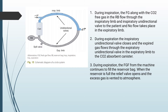During inspiration, the fresh gas with the carbon dioxide-free gas from the reservoir bag flows through the inspiratory limb (indicated by blue) and the inspiratory unidirectional valve to the patient, with no flow in the expiratory limb (shown in gray). During expiration, the inspiratory valve closes and expired gas flows through the expiratory unidirectional valve through the expiratory limb to the carbon dioxide absorbent canister. The fresh gas flow from the machine continues to fill the reservoir bag, and when the bag is full, the relief valve opens and excess gas is vented through the APL valve.